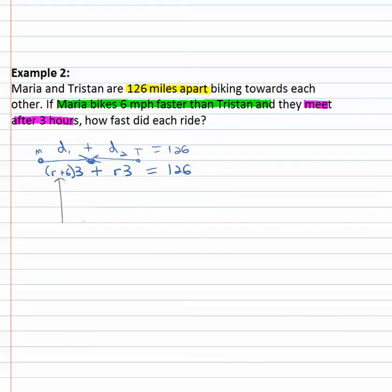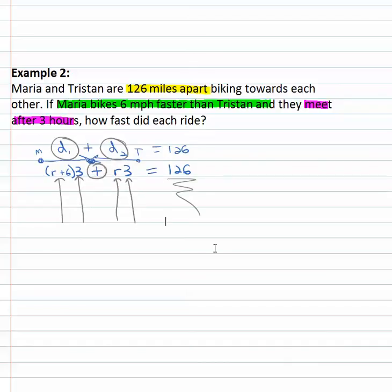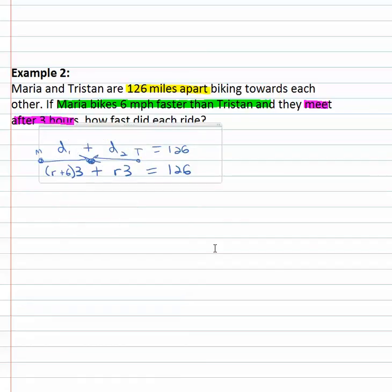The rate of the first person times the time of the first person gives the distance of the first person. The rate of the second person times the time of the second person gives the distance of the second person. When we add those distances together, we get our total, and we now have an equation we can solve.